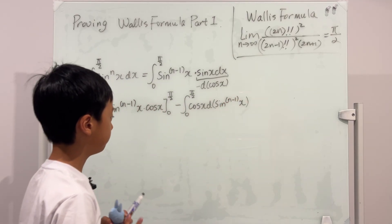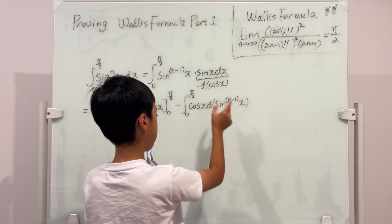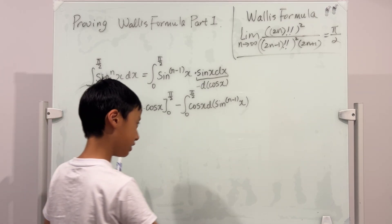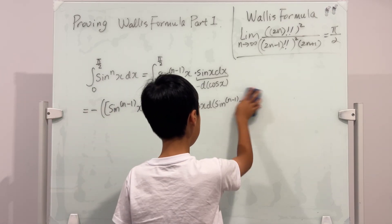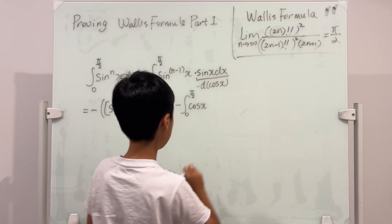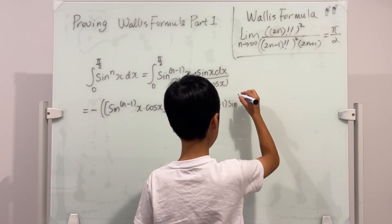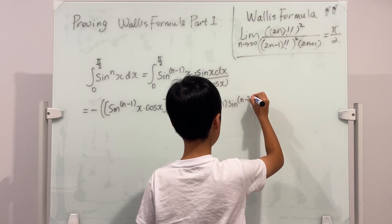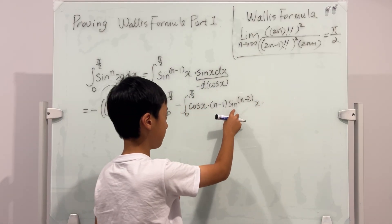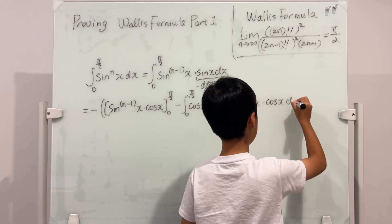d(sine^(n−1) x) is easy to calculate — just take the derivative using the power rule and chain rule. We bring the power down, giving n minus 1, then sine to the n minus 2, and multiply by the chain rule: the derivative of sine x is cosine x. And of course, don't forget the dx.